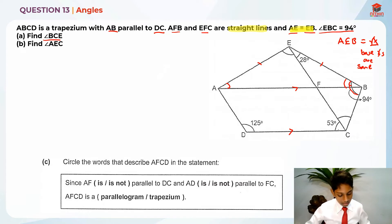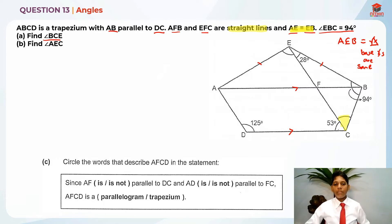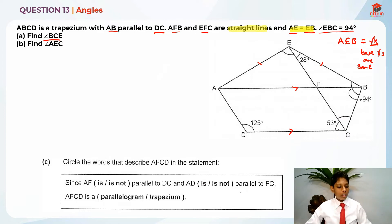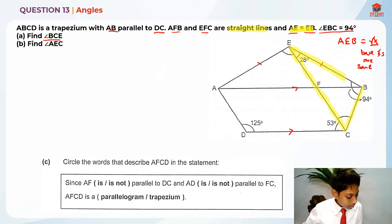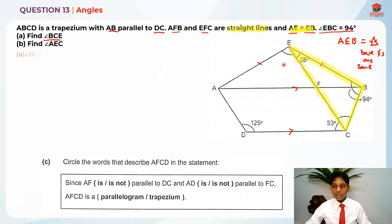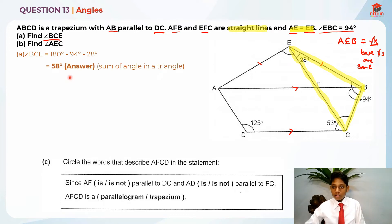Okay, let me erase. Where's BCE? It is over here. Let me show you a really good clue in order to find this angle. The thing I highlighted right now is actually a triangle, and in a triangle there are 180 degrees. We already have two angles, so we can find the last angle which is BCE. We take 180 degrees minus 94 degrees minus 28 degrees, which gives us 58 degrees. This is the sum of angles in a triangle.